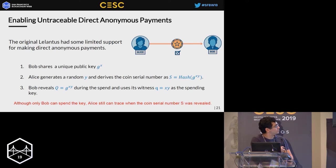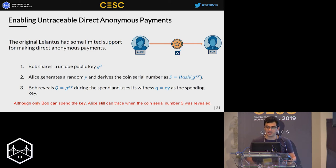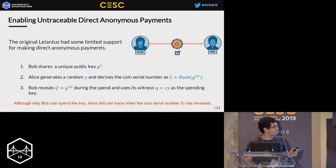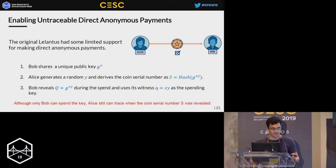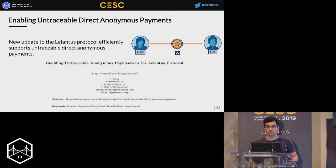When Bob wants to spend the coin, he reveals the public key and uses it as the spending key. Since Alice didn't know the witness, she couldn't spend the coin. However, the problem is that Alice knows this generated public key, so she can trace the network for known serial numbers and detect when the coin was spent. We want a scheme where only the recipient, Bob, can recover the coin serial numbers.